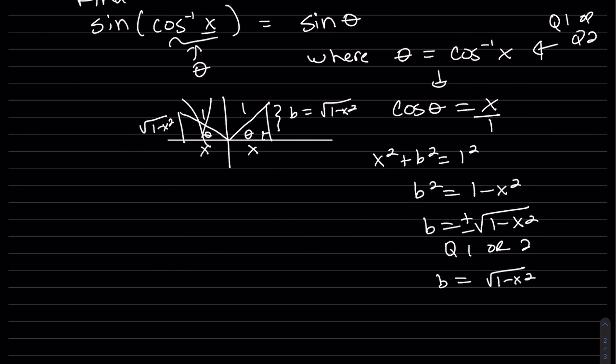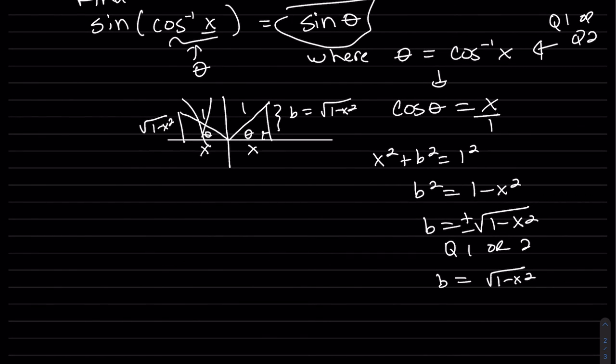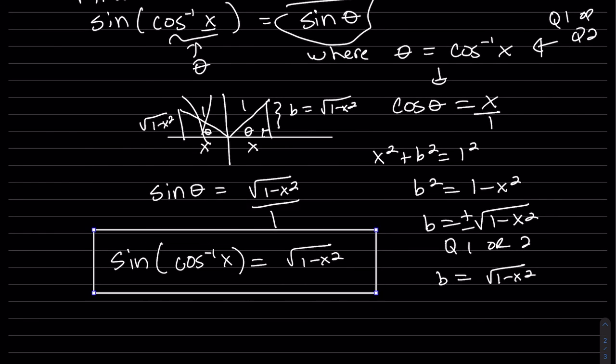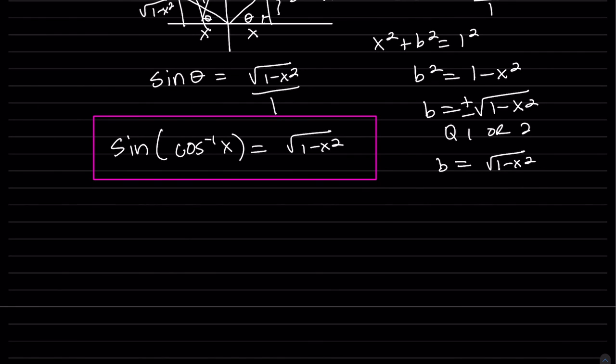So we want the sine of that theta. That theta, the sine of that theta, is the opposite over the hypotenuse. So that is the composition. The sine of cosine inverse of x is just square root of 1 minus x squared. And that's our answer. Thanks for watching.